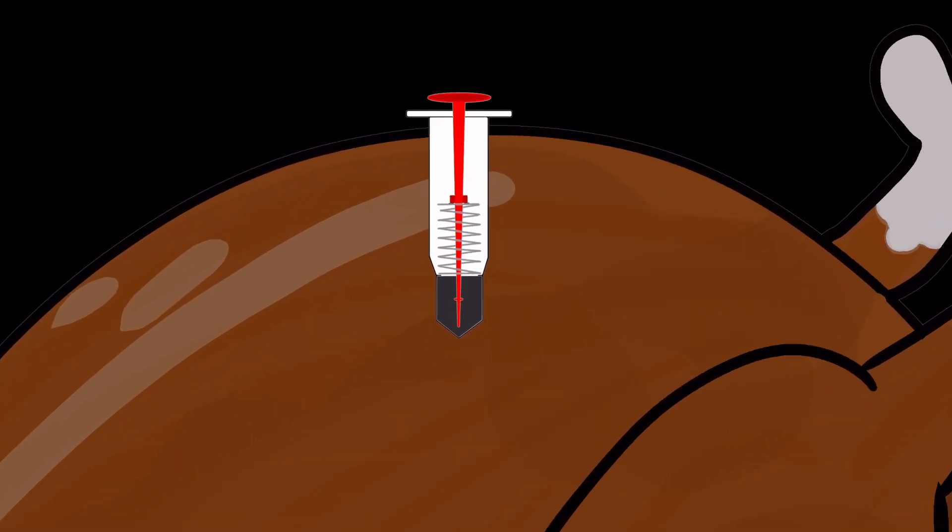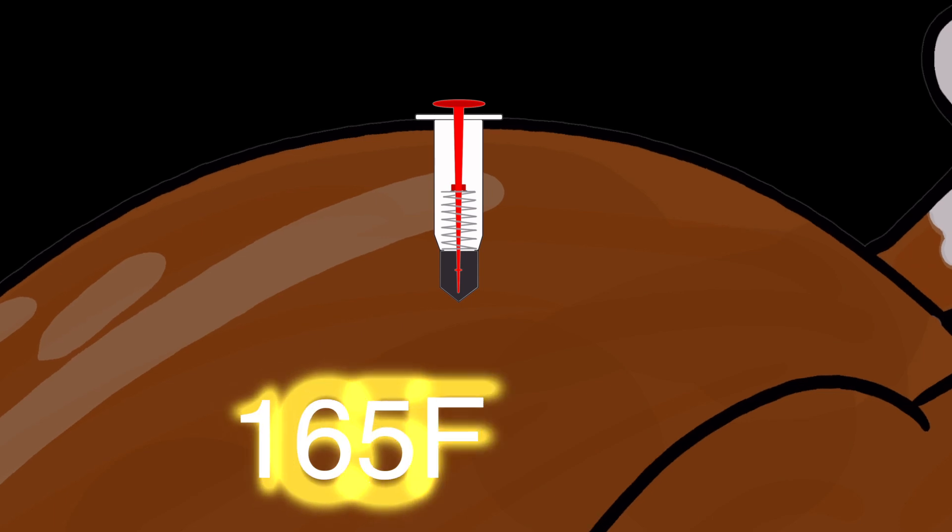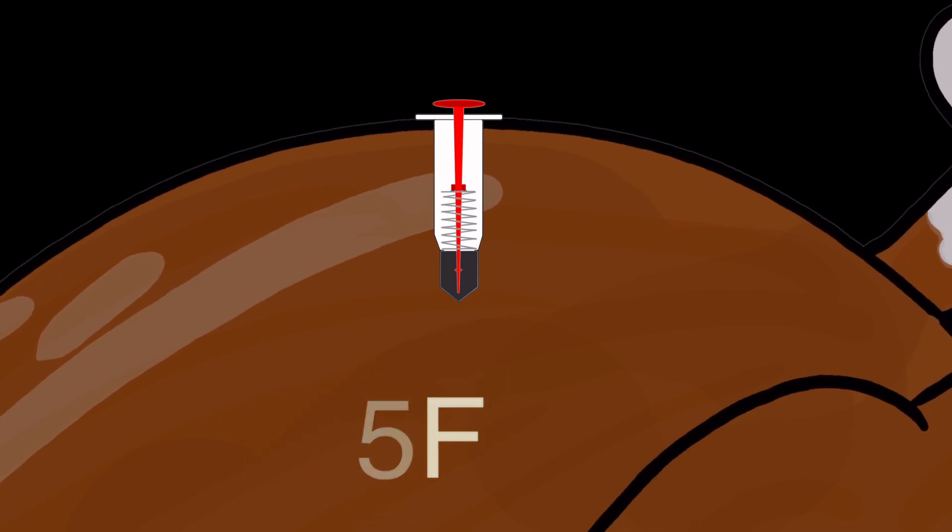When this now goes inside your turkey and the inside of the turkey reaches that 165 degrees Fahrenheit temperature, then the metal will actually start to melt and the pin will be released, popping out, giving you the red flag that your turkey is ready for Thanksgiving.